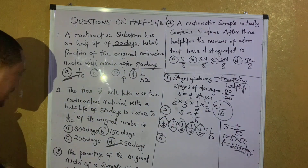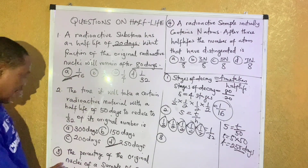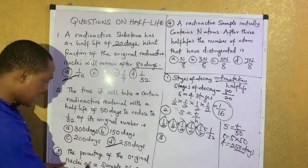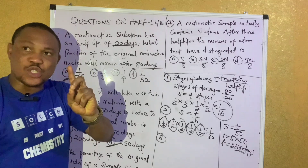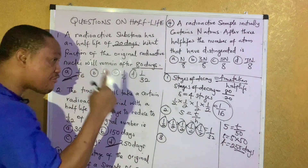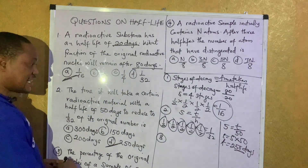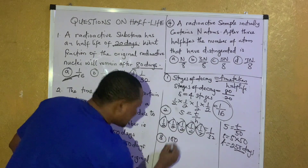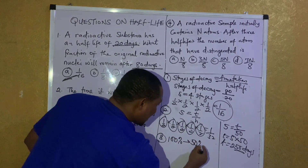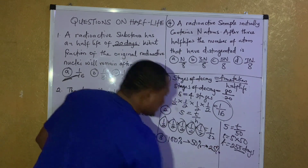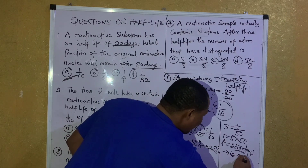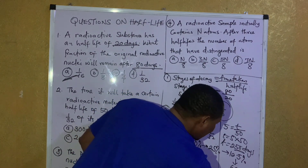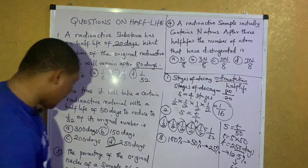Number 3: They are asking us in percentage this time. The question is: what percentage of the original nuclei of a radioactive substance is left after 5 half-lives? So we are working in percentage now, not fractions. The whole atom before decay is 100%. We need to find how much remains after 5 half-life periods.